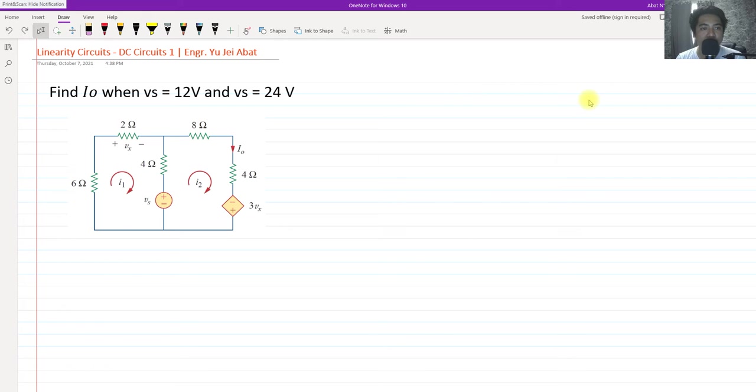So for today's video, we're going to solve this. What is linearity? Linearity means the output of a certain circuit is linearly dependent on the input. In this case, the I sub O output is dependent on the input V sub S. We are going to find I O when V sub S or the voltage source is 12 volts and 24 volts. Let's get started.